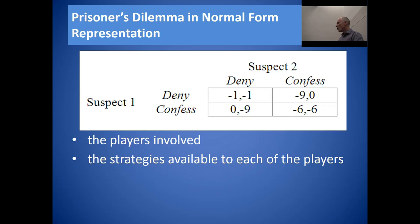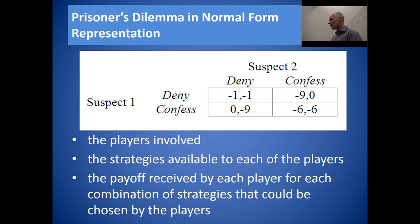We will also show in normal form the strategies available to the players — what choices they can take. For both players, their choices were either to deny or to confess. And lastly, the rest of the information comprises the payoffs that players receive from various combinations of these strategies.